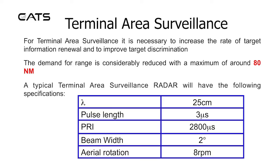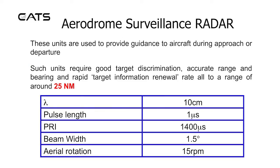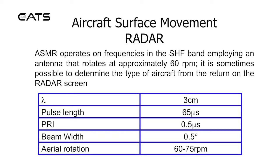For terminal area surveillance, it is necessary to increase the rate of target information renewal and improve target discrimination, with a maximum range of around 80 nautical miles. For aerodrome surveillance radar, units provide guidance to aircraft during approach or departure, requiring good target discrimination, accurate range and bearing, and rapid target information renewal rate, all to a range of around 25 nautical miles. ASMIR operates on frequencies in the SHF band, employing an antenna that rotates at approximately 60 rpm, and it is sometimes possible to determine the type of aircraft from the return on the radar screen.